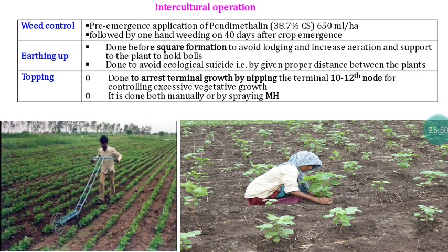The bolls that develop initially need photosynthetic material for boll development and seed setting. If boll development and vegetative growth happen simultaneously, there will be a problem with photosynthetic material partitioning. So after the plant reaches 10 to 12 node stage, we must arrest apical growth. Nipping can be done manually — removing the apical bud — or by applying Maleic Hydrazide. Previously we discussed Maleic Hydrazide application in groundnut to prevent viviparous germination; here it is applied to arrest vegetative growth, killing the terminal part.